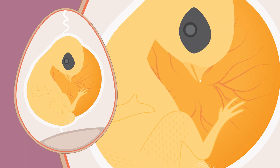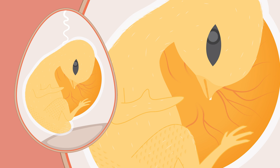Day 11: tail feathers present, comb serrated. Day 12: toes fully formed, first few visible feathers, completion of differentiation stage, beginning of growth stage.